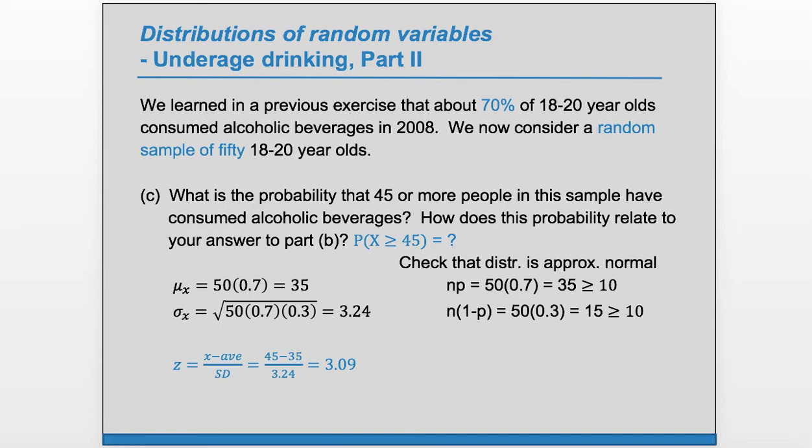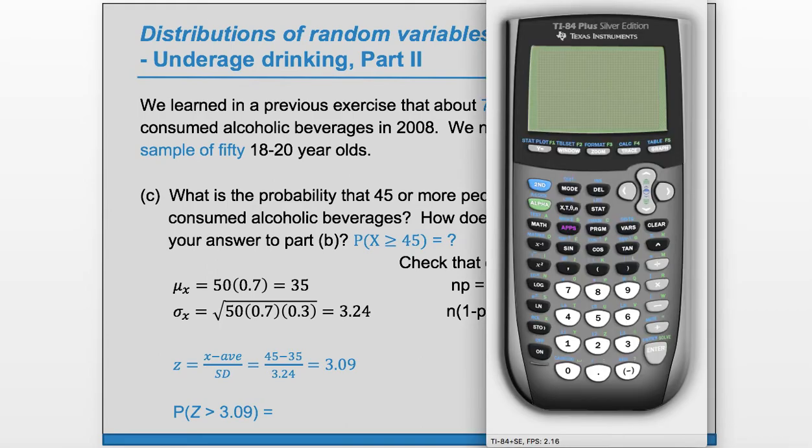And because we want 45 or more, we'll be looking for the area to the right of that z-score under the normal curve. So you can use whichever technology you like. Here I'll use a TI. So I'm going to go to 2nd VARS distribution and choose number 2, which is norm CDF. Our lower bound is 3.09. And our upper bound is some big number, so we can just choose 6, it's a very large z-score. And hit enter and enter again, and we get .001.